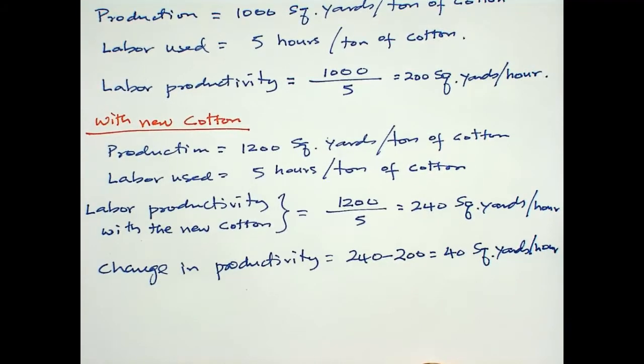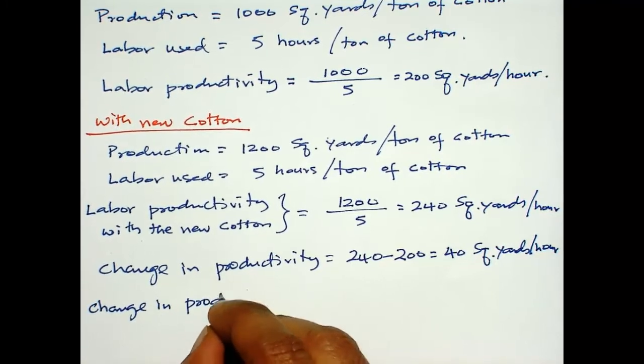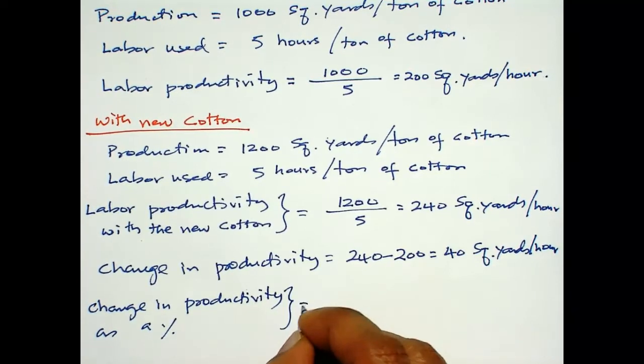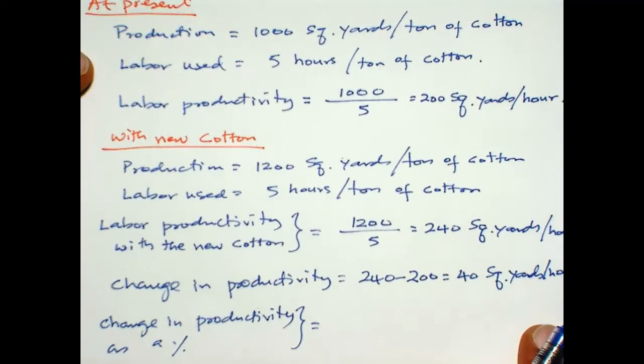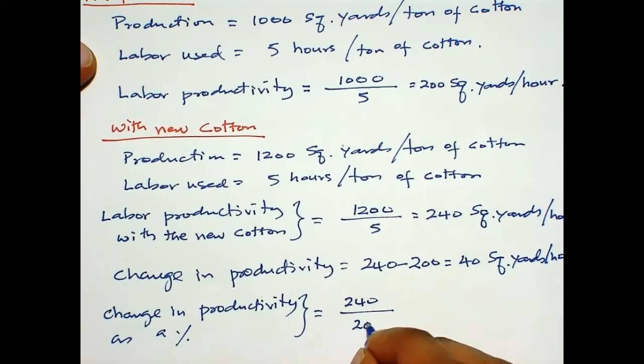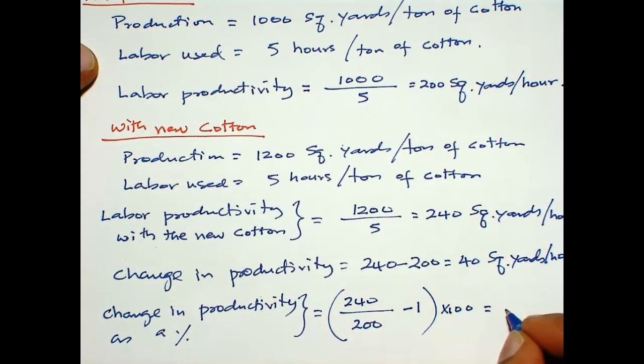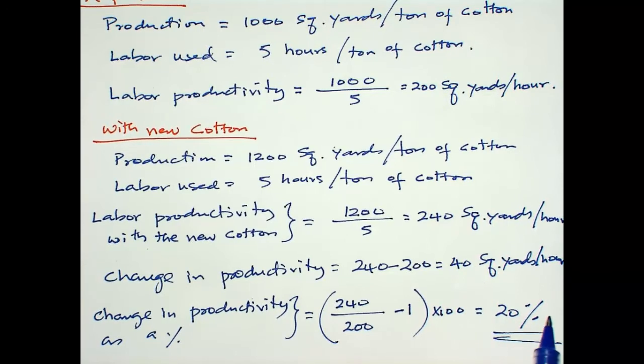Often we express the change as a percentage. So change in productivity as a percentage: we use this formula - new productivity is 240, base productivity at present is 200, minus 1, multiply by 100, which is 20 percent. So the change in productivity is 40 square yards per hour, which represents a 20 percent increase in productivity.